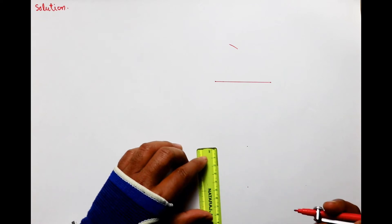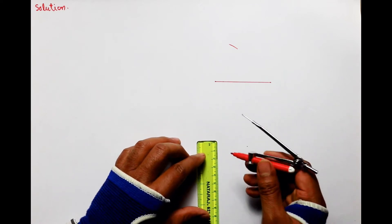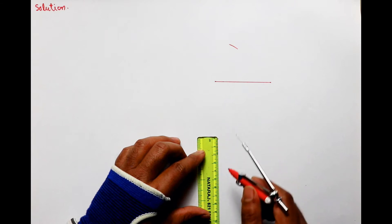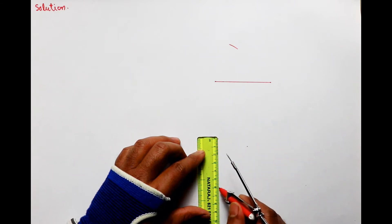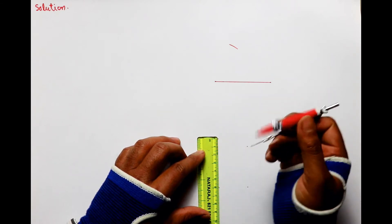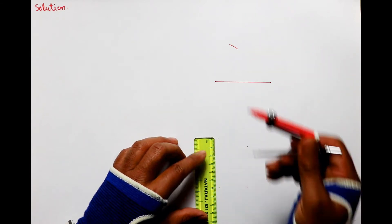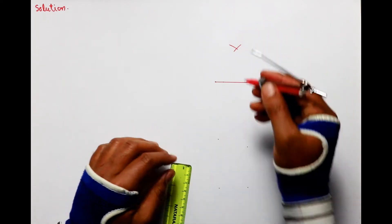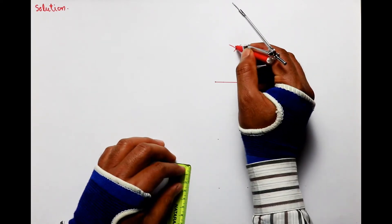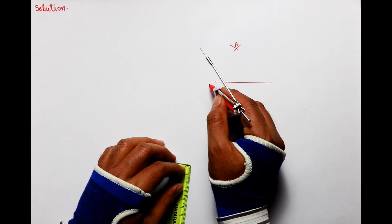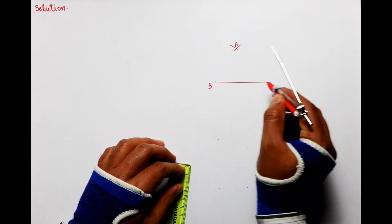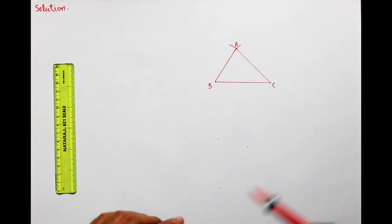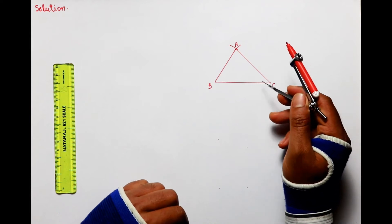अब इसके बाद 6 cm का एक और arc लगाएंगे जो पहले वाले arc को काटे — इस वाले को। जगह A, इससे मान लेते हैं B और इससे C। अब इन्हें आप मिला भी लीजिए। तो बच्चों हमने given triangle बना लिया।